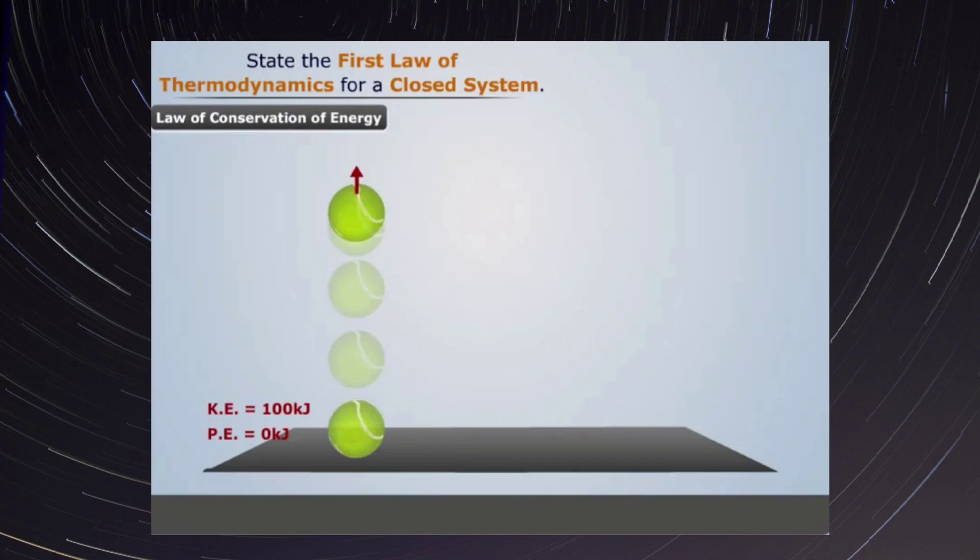Now as the ball moves in the upward direction, we see that its kinetic energy starts decreasing and its potential energy starts increasing. Finally, when the ball reaches the peak point, its kinetic energy becomes zero while the potential energy becomes approximately 100 kilojoules.